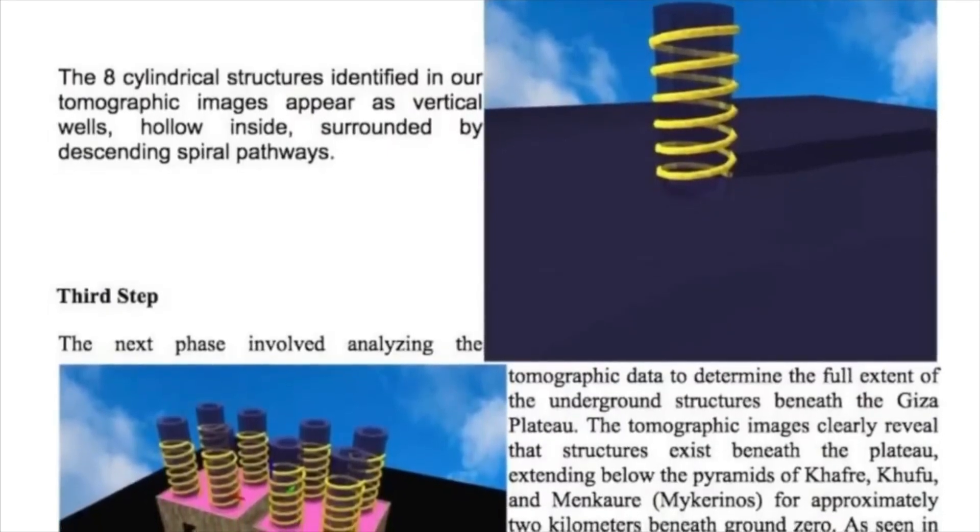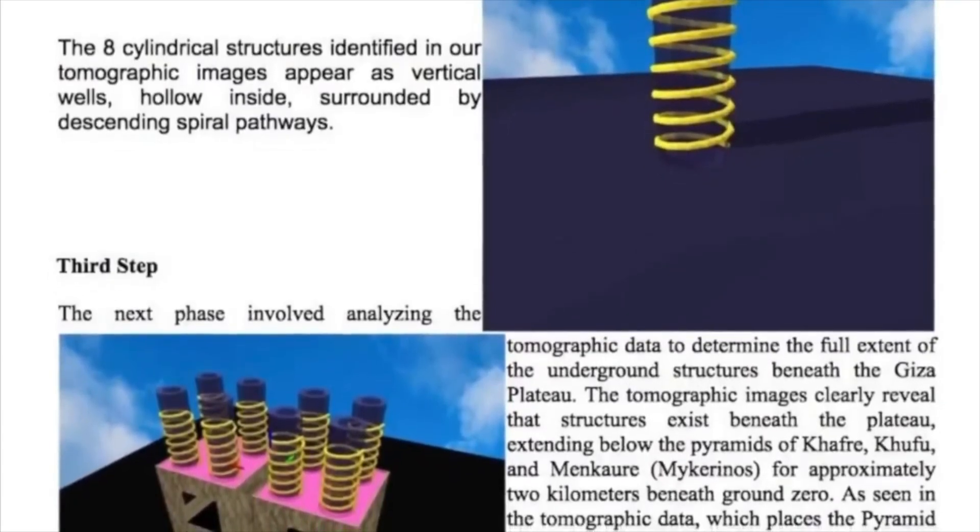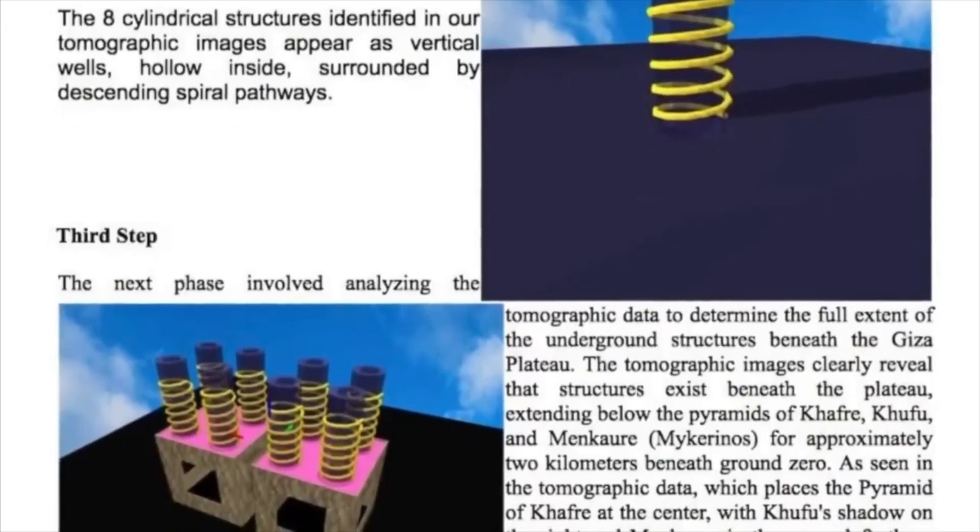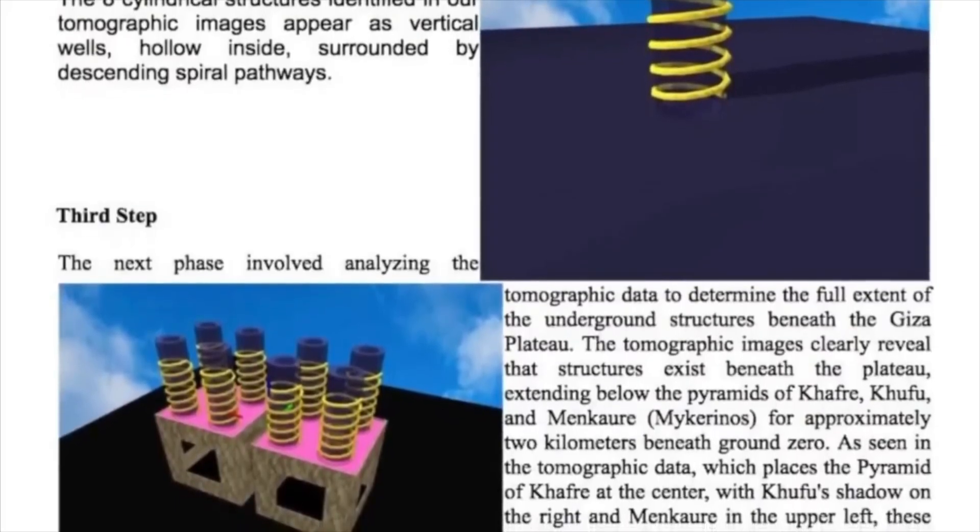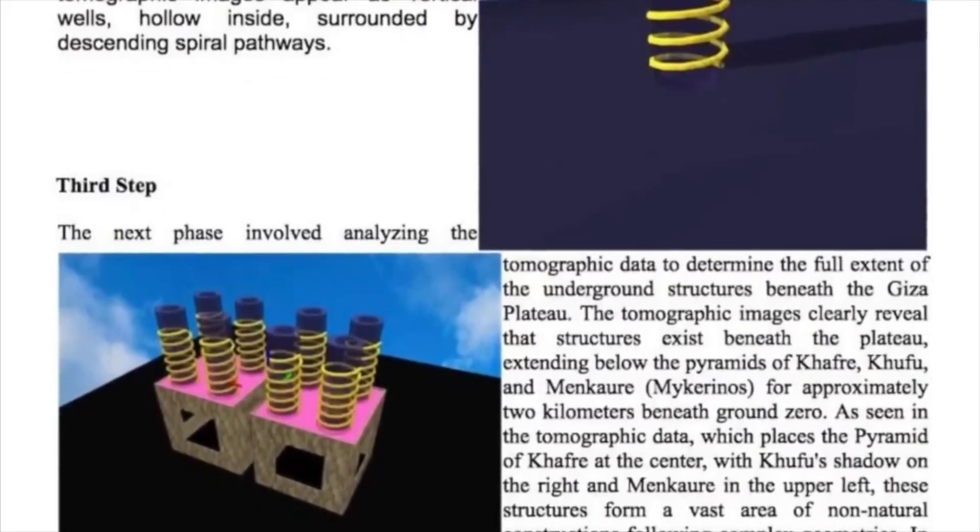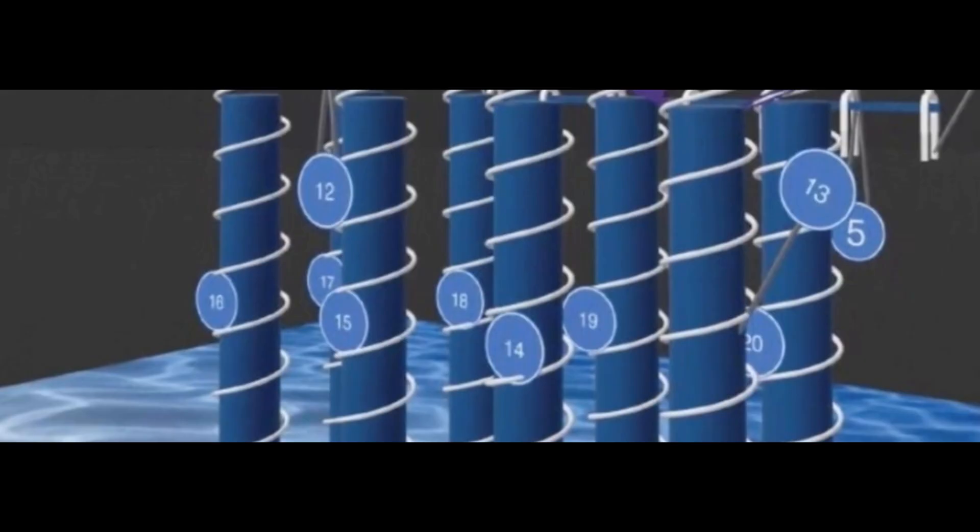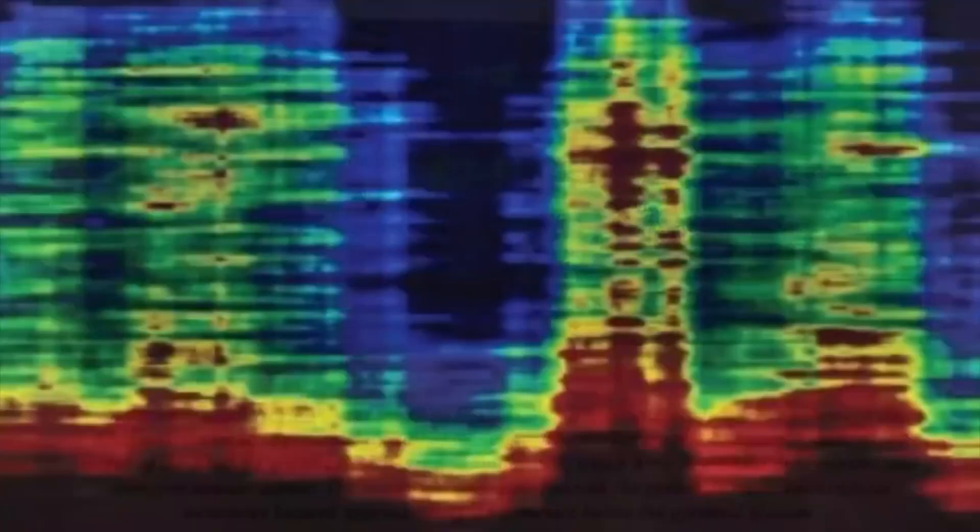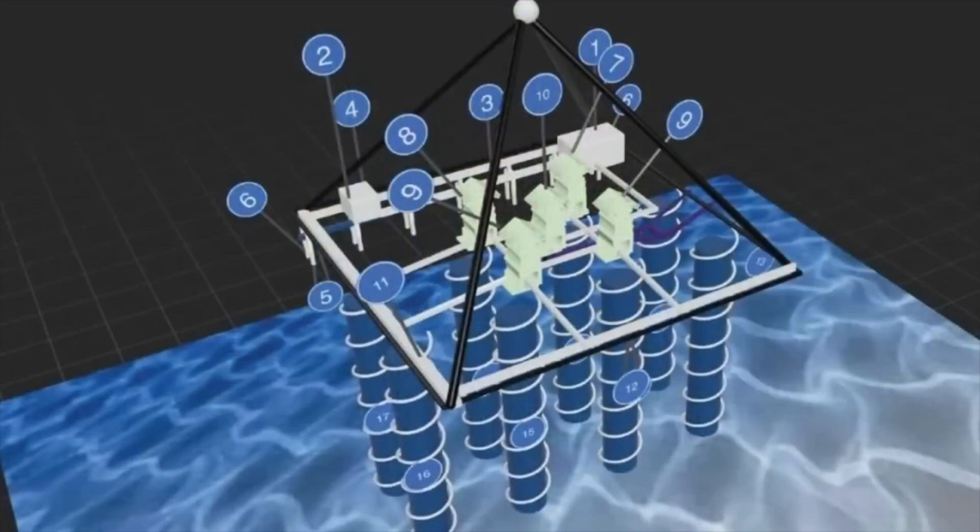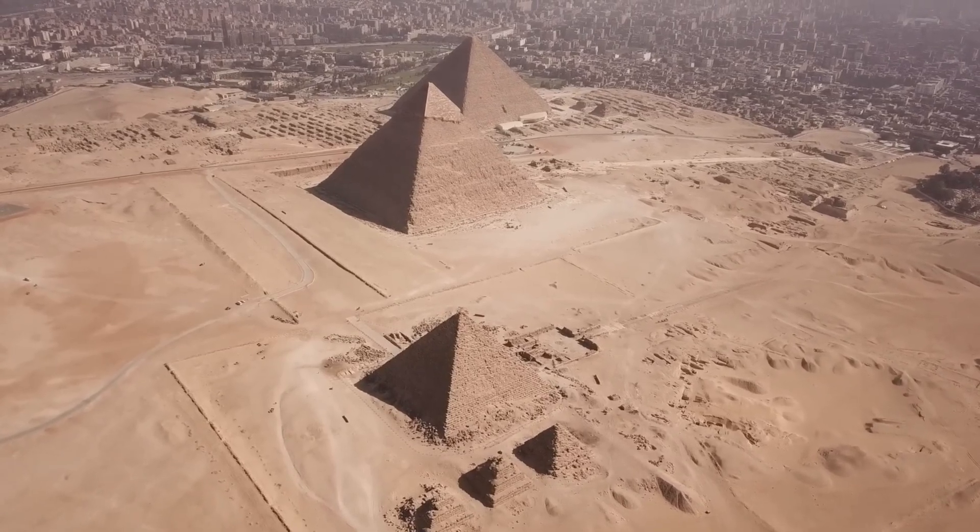The pyramid itself was already a massive red flag in the ancient Egyptian historical narrative. But now with this discovery, I think it's becoming impossible to argue that the Egyptian civilizations we've been taught about were responsible for building these structures. And it doesn't even end there. The radar analysis extends beneath the entire Giza Plateau, revealing interconnected structures beneath not only the Great Pyramid of Giza, but also those of Khufu and Menkaure. The subsurface network reaches down to a staggering depth of approximately two kilometers. This is simply not possible within the standard historical and archaeological narrative we've been given about ancient Egypt.